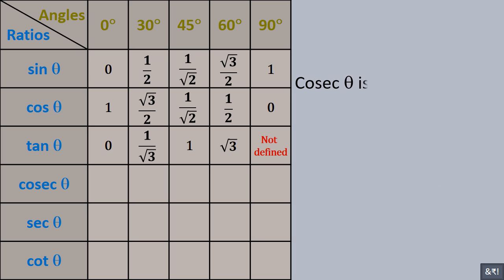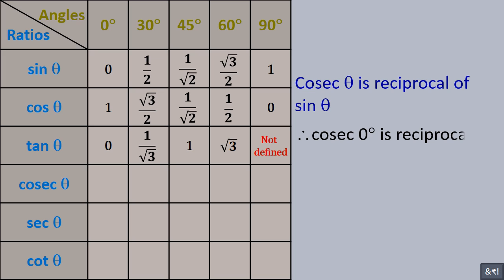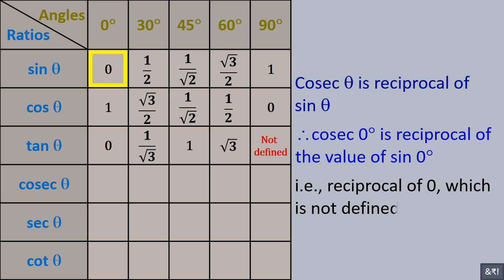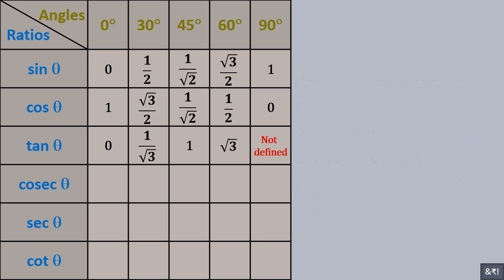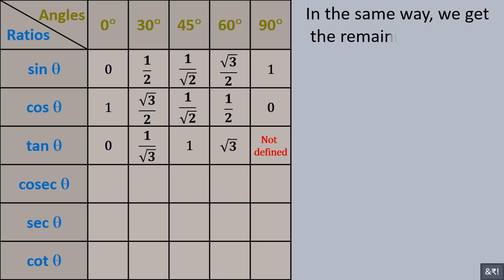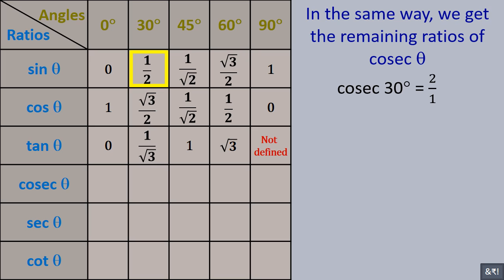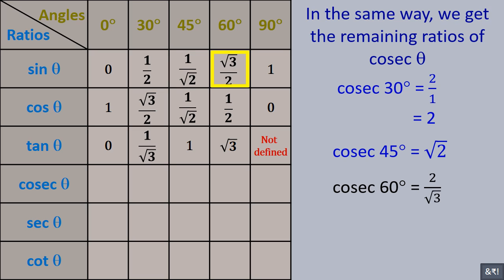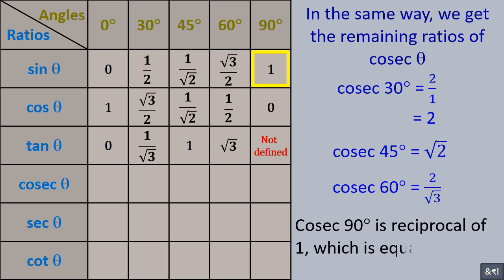Cosec theta is the reciprocal of sine theta. Therefore, cosec 0° is the reciprocal of sin 0° = reciprocal of 0, which is not defined. In the same way, cosec 30° = 2, cosec 45° = √2, cosec 60° = 2/√3. Cosec 90° = reciprocal of 1 = 1.